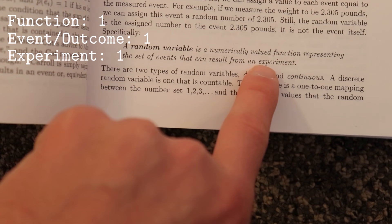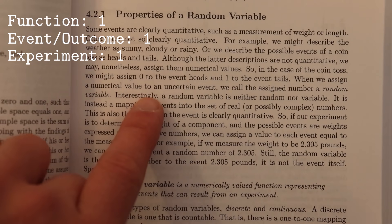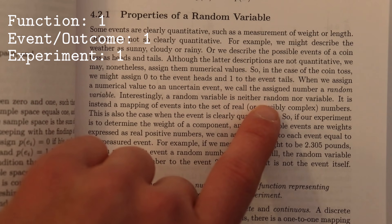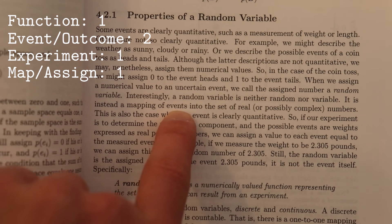Function, events, experiment. A random variable is neither random nor variable. It's a mapping of events.